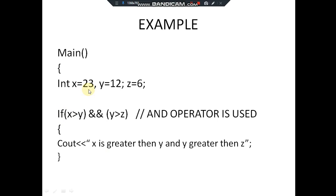Here is a simple program: x is equal to 23, y is equal to 12, and z is equal to 6. Using an if statement with the AND operator: if x is greater than y AND y is greater than z — both conditions are necessary to be true to execute the statement. Both are true because x is greater than y and y is greater than z, so the statement executes. If one of them was false, the statement would not execute.